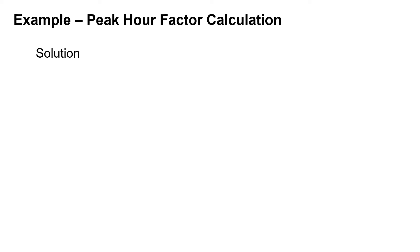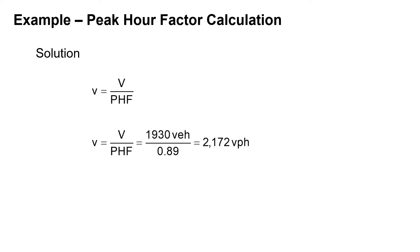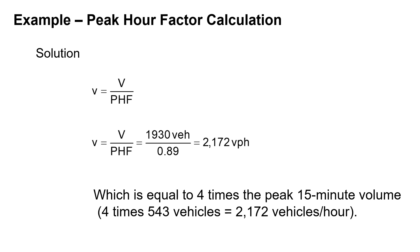Now let's solve it from the other direction. The peak 15-minute flow rate, lowercase v, equals the total hourly flow divided by the peak hour factor. That's 1,930 vehicles divided by 0.89, which gives a peak flow rate of 2,172 vehicles per hour. We can verify this: four times the peak 15-minute volume of 543 vehicles also gives 2,172 vehicles per hour, confirming the two approaches align.